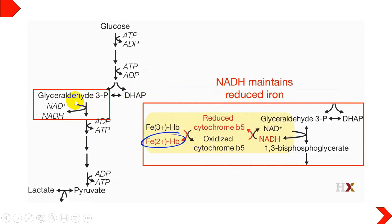Additionally, the NADH produced during the conversion of glyceraldehyde-3-phosphate to 1,3-bisphosphoglycerate is used for the reduction of oxidized cytochrome b5. The oxidized cytochrome b5 is reduced by NADH, converting NADH back to NAD so the cycle continues. This reduced cytochrome helps in the reduction of iron, which plays an important role in oxygen transportation within hemoglobin.